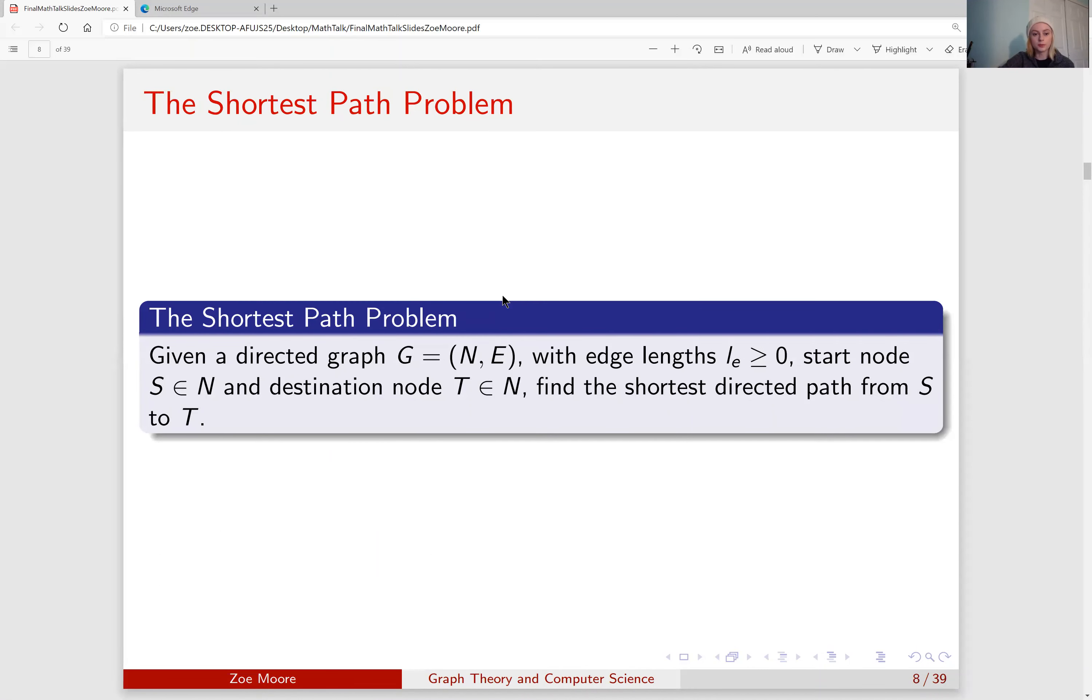Now the shortest path problem is a good example of working with graphs and working with traversing graphs. The shortest path problem says given a directed graph G with nodes N and edges E, where the edge lengths L sub E are greater than or equal to zero, and a start node S in our set of nodes, and a destination node T in our set of nodes, find the shortest directed path from S to T.